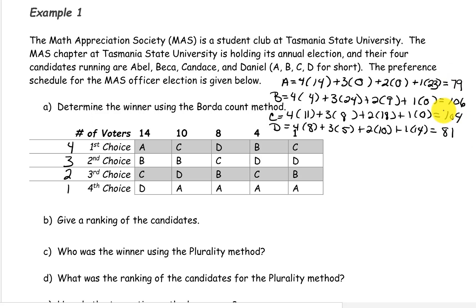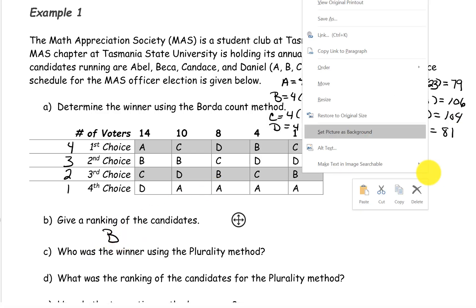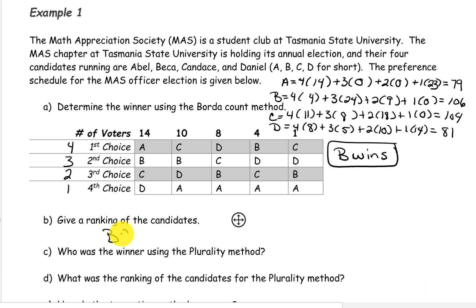The candidate that has the most points is the winner, so B wins. Giving a ranking from most to least points: candidate B is first with 106 points, candidate C is second with 104 points, then candidate D with 81 points, and finally candidate A with 79 points.